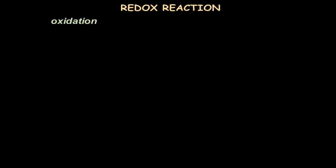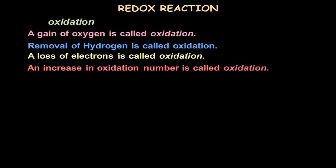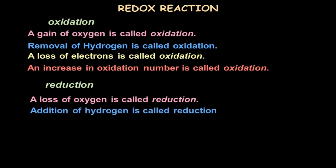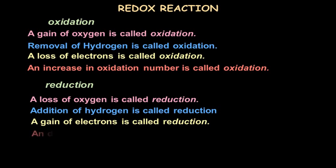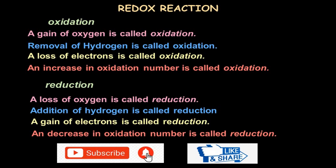Let's revise the definitions. Oxidation is: (1) gain of oxygen, (2) removal of hydrogen, (3) loss of electron, and (4) increase in oxidation number. Reduction is: (1) loss of oxygen, (2) addition of hydrogen, (3) gain of electron, and (4) decrease in oxidation number. A combination of oxidation and reduction occurring in the same reaction is called a redox reaction.